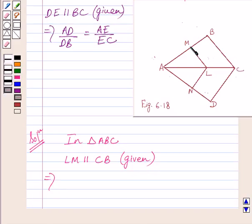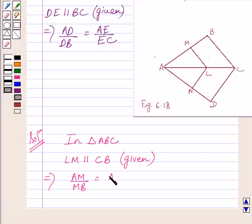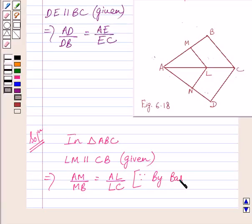This implies AM upon MB is equal to AL upon LC, by the Basic Proportionality Theorem.